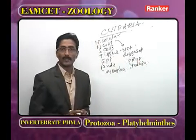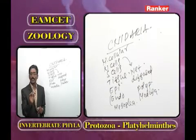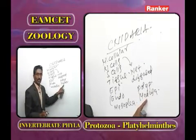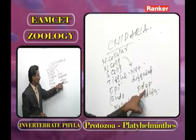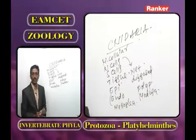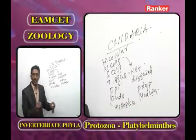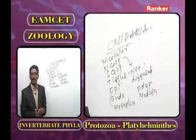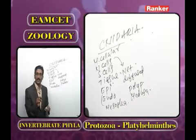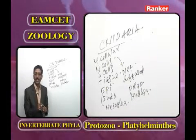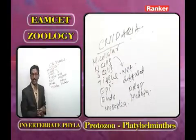The polyp is sedentary and cylindrical in shape; the medusa is free-swimming and umbrella-shaped. Only in the medusa, statocysts are present to maintain balance. In the medusa, nerve ring and ganglia are first observed — appearing for the first time in phylum Cnidaria.